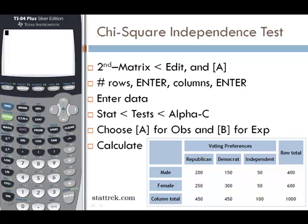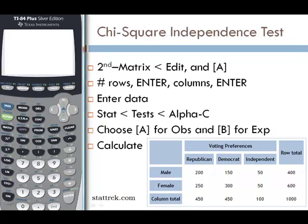We're going to enter these voting preferences into a matrix before we have the calculator compute the chi-squared value and the p-value. To get a matrix, we will do second matrix. To edit a matrix, we actually have to scroll twice to the right to edit. And we will hit A for option A.